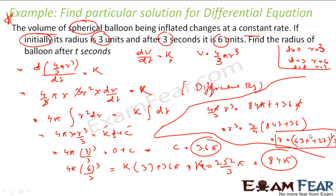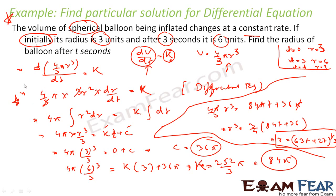Please understand this question — it is a challenging one. We were told the volume changes at a constant rate, so dV/dt = k. Using V = 4/3 π r³ with initial conditions t=0, r=3 and t=3, r=6, we solved the differential equation to find the radius at time t.